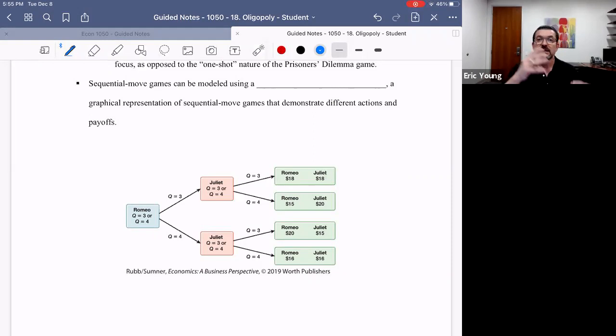What I taught you in the last video, the payoff matrix, that was designed to illustrate and model simultaneous move. In this video, I want to teach you just a really quick tool called a decision tree that will help you understand sequential move games.